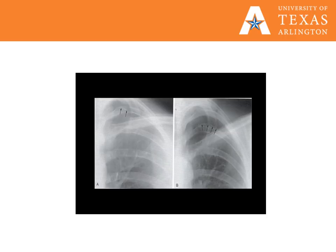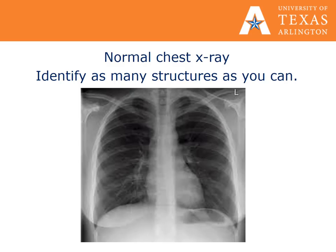Here is an example of a pneumothorax with an inspiratory and expiratory film. Notice how the pneumothorax becomes relatively larger in picture B, which is the expiratory film. This is an example of a normal chest X-ray — try to identify as many structures as you can.